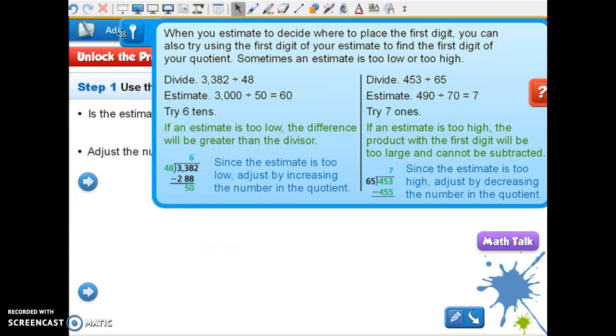You can also try using that first digit of your estimate to find the first digit of your quotient. Sometimes an estimate is too low or too high. Okay, so in this one we rounded 3,382 to 3,000 and we rounded 48 to 50, so we got an estimate of 60.